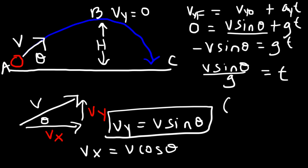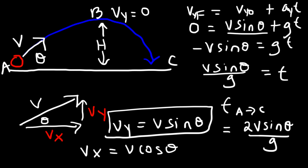The time from A to C is twice that value because the graph is symmetrical. If it takes 5 seconds from A to B, it takes 5 seconds from B to C, so A to C is 10 seconds. The total time is 2V·sinθ divided by G. Note that G is negative 9.8, so it cancels the negative sign — time is always positive.